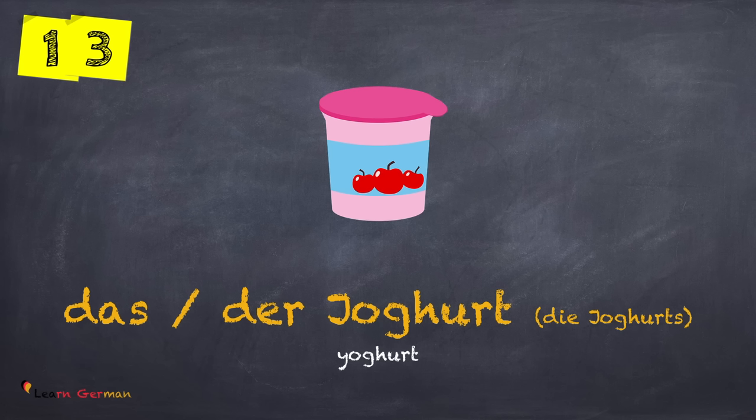das Joghurt or der Joghurt. The plural is die Joghurts — once again, der Joghurt, die Joghurts.